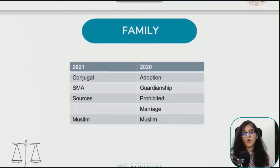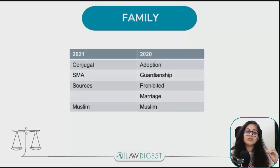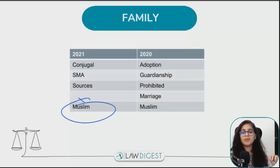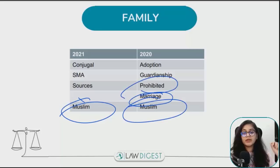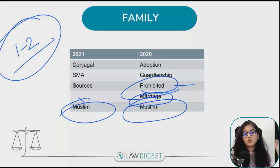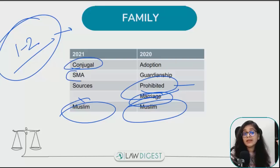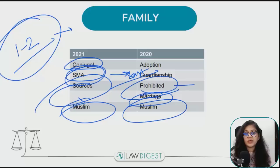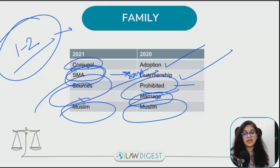Family Law में marriage and dissolution of marriage दोनों चीजें important हैं - Hindu law में भी, Muslim law में भी। Marriage से questions आते हैं, prohibited degrees से question आ गया। Sections और articles सारे याद रखना जरूरी नहीं है - एक दो questions आते हैं इस पे, इतना time waste मत कीजिए। Sources of Muslim law, adoption, guardianship - all these things are important from exam point of view। Even in 2019, questions were asked from these areas।